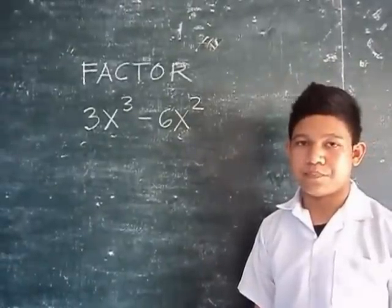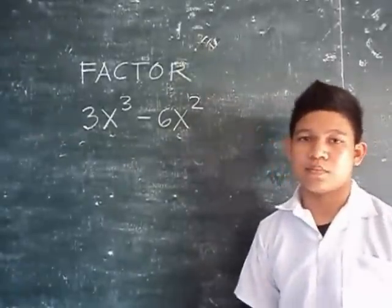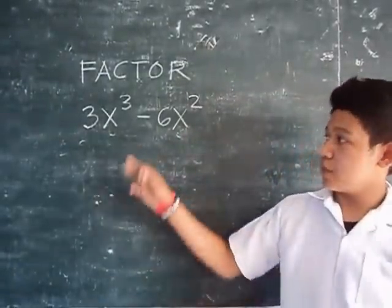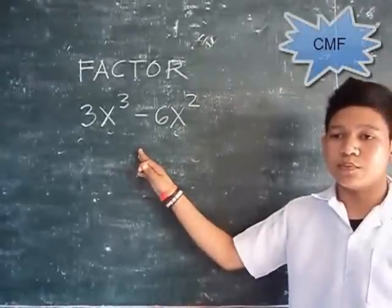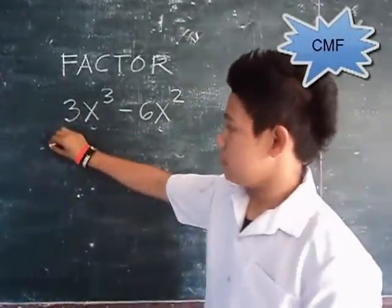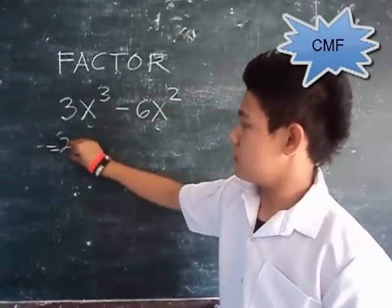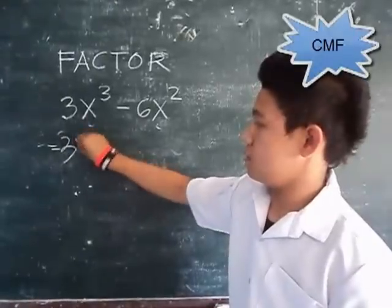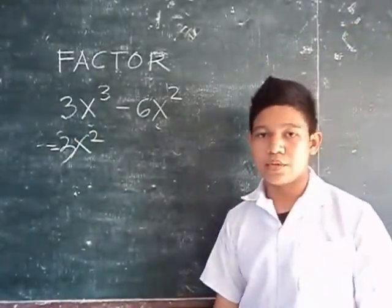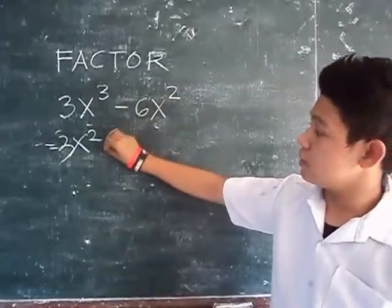Factor 3x³ minus 6x². To factor this, find the common monomial factor. Then determine the other factor.